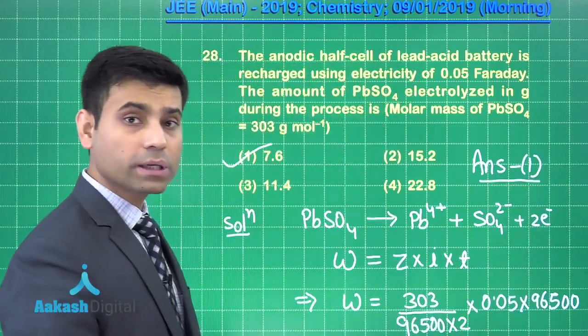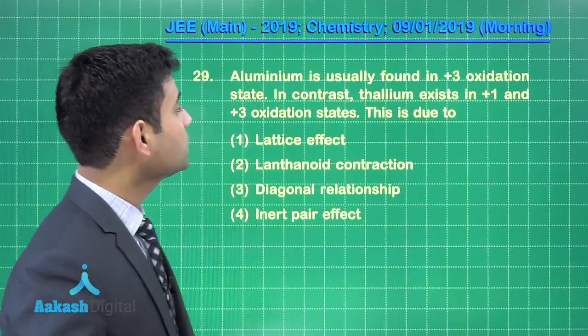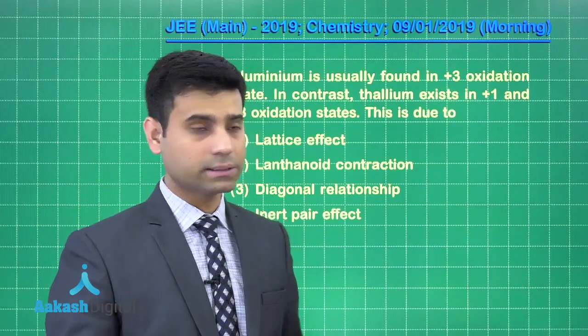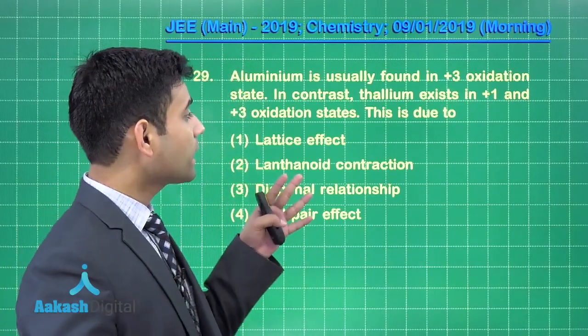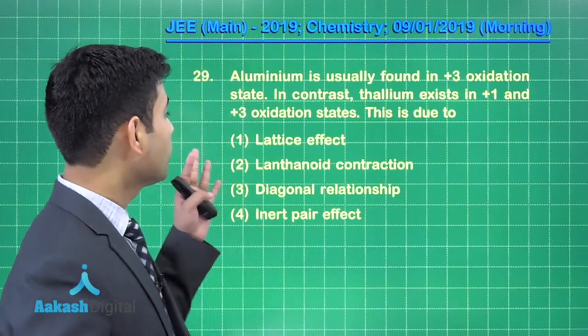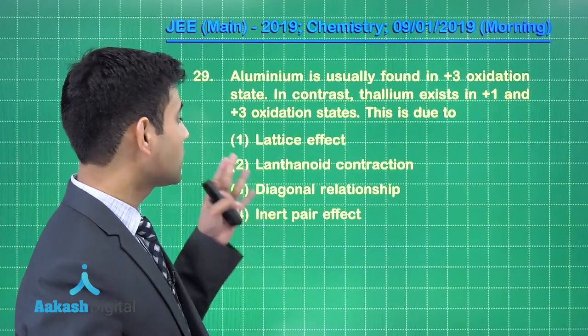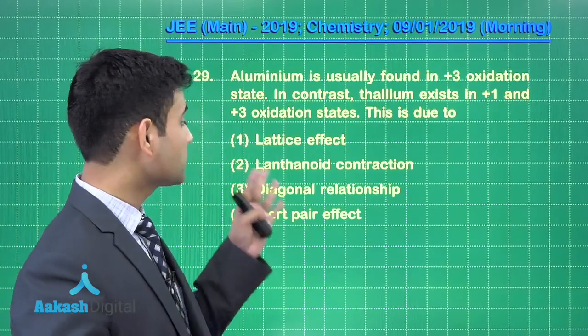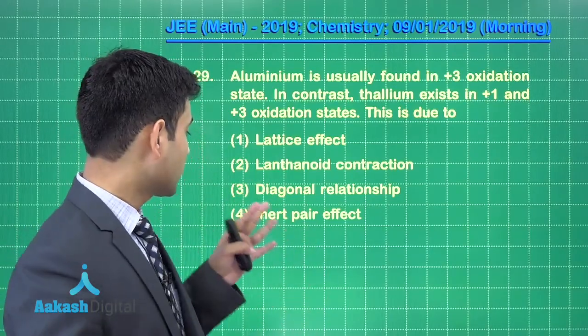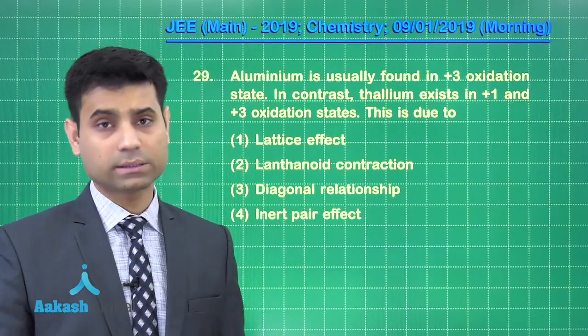Now, let us move to the next question. This is the next question we have which says aluminum is usually found in +3 oxidation state. In contrast, thallium exists in +1 and +3 oxidation states. This is due to (1) Lattice effect (2) Lanthanoid contraction (3) Diagonal relationship (4) Inert pair effect.